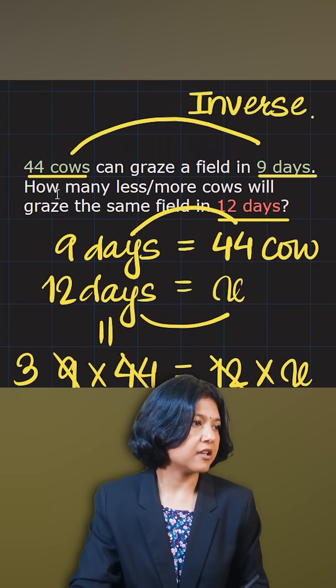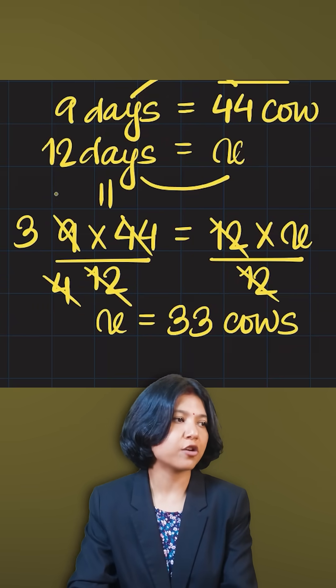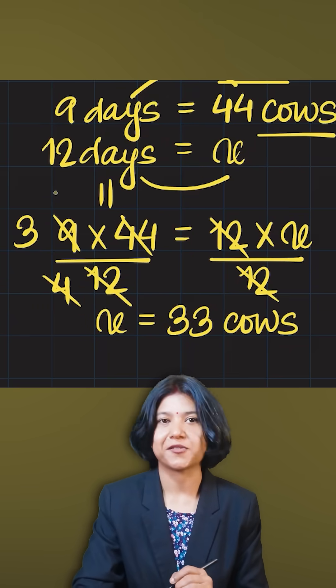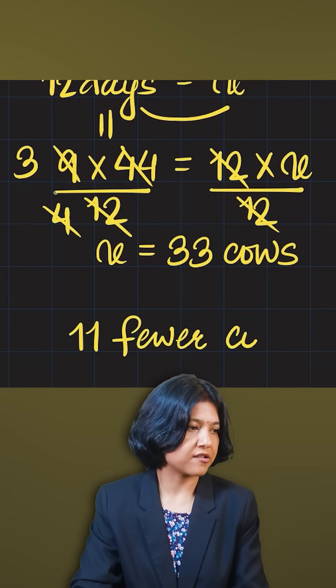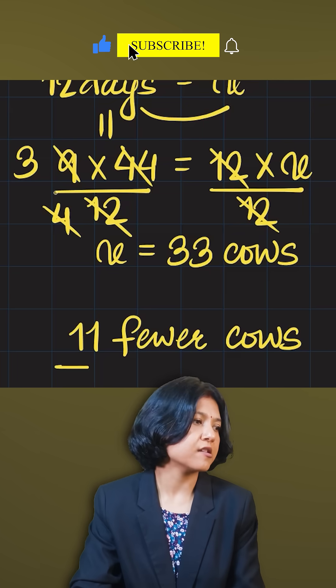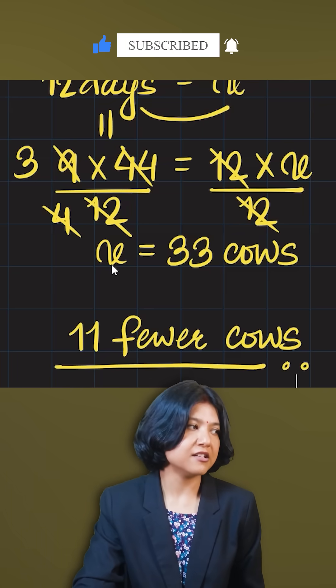But the question is asking me, how many less or more? Previously, we had 44 cows. Now we have 33. So the difference is 11, 11 fewer cows. This is the answer. Now we have 11 fewer cows if you want the field to be grazed in 12 days.